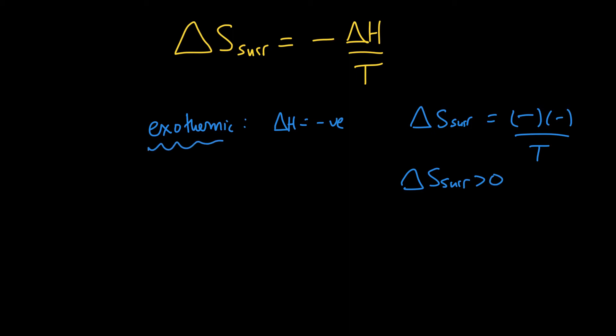So exothermic reactions are relatively favorable. If we look at it from the reaction's point of view, anytime there's an exothermic reaction, it is given off heat. And that heat causes the surroundings entropy to go up like crazy. So this is always going to be a positive influence on the total entropy change of the universe.